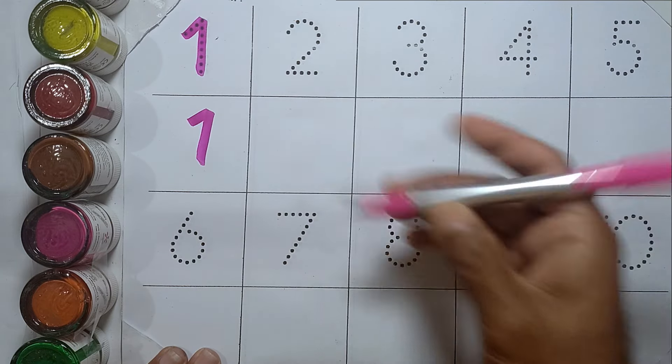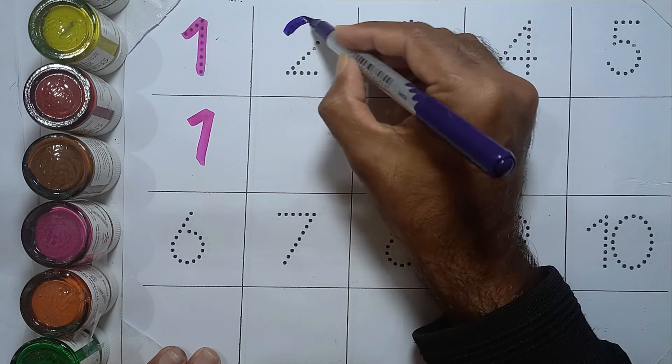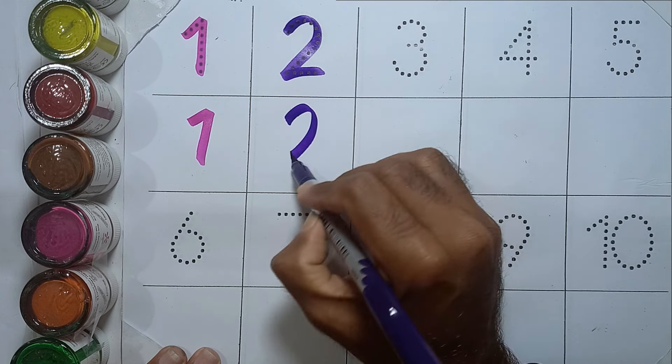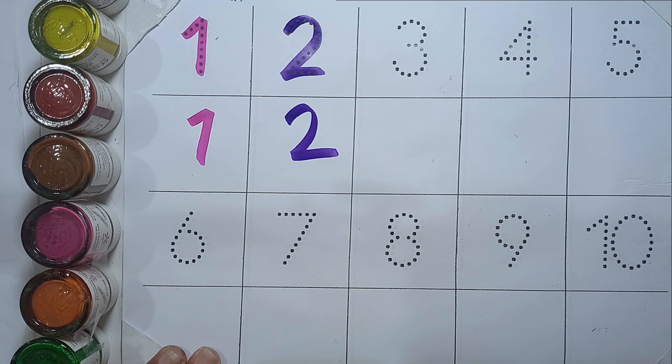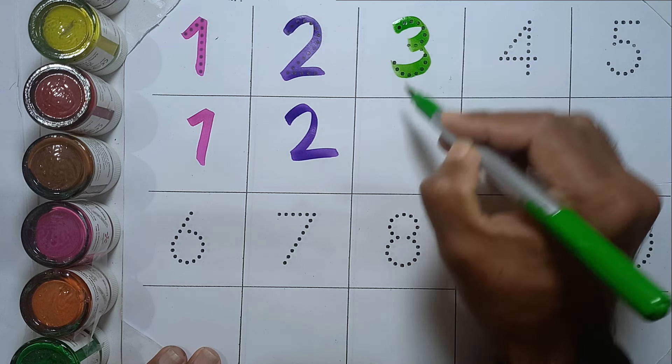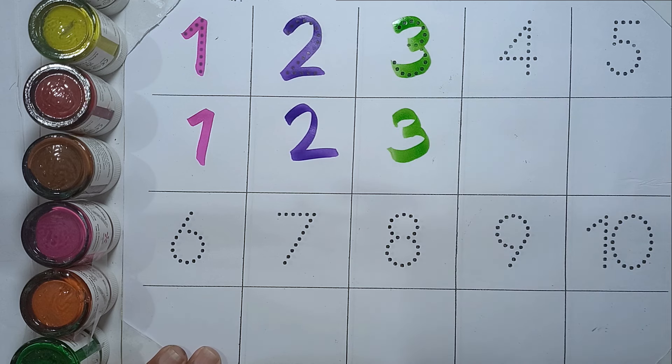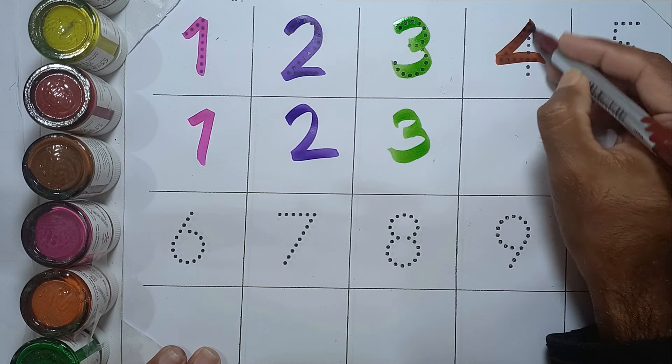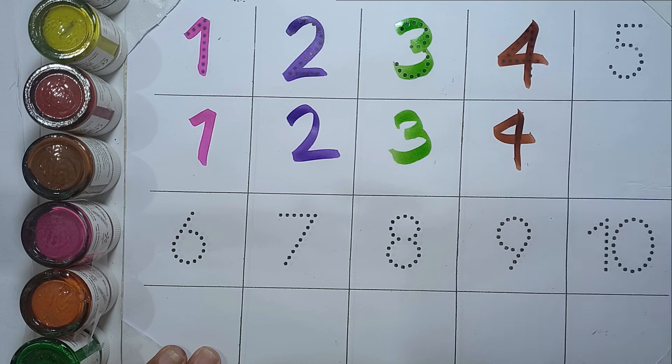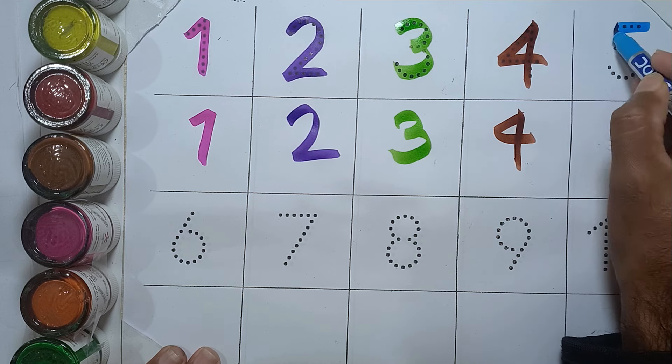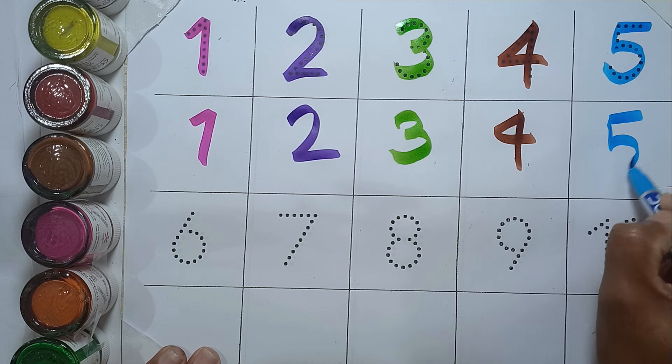One: O-N-E, one. Two: T-W-O, two. Three: T-H-R-E, three. Four: F-O-U-R, four. Five: F-I-V-E, five.